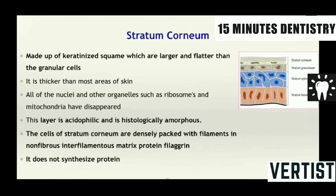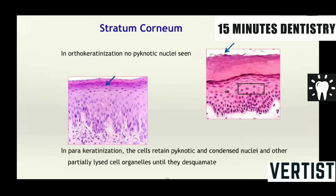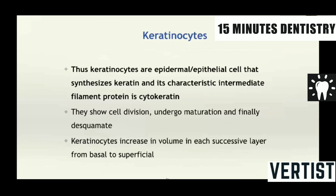Then coming to the last layer which is the stratum corneum. Here the cells become more larger, they are more flatter than the granule layer and they are basically acidophilic in nature. Histologically they appear as amorphous. The cells of the stratum corneum are densely packed with filaments, non-fibrous interfilamentous matrix proteins and filaggrin. They do not synthesize any proteins. Stratum corneum may be either orthokeratinized where you see no pyknotic nuclei, or parakeratinized where the cells retain pyknotic and condensed nuclei and other partially lysed cell organelles until they desquamate.